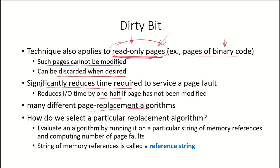There are many different page replacement algorithms that help identify a victim frame — that is, which particular frame will be freed. To evaluate how well a replacement algorithm works, we run it on a particular string of memory references called a reference string and compute the number of page faults. For a given algorithm, the number of page faults is computed for this reference string, and whichever algorithm produces fewer page faults is considered a better replacement algorithm. Page replacement algorithms will be covered in further videos.